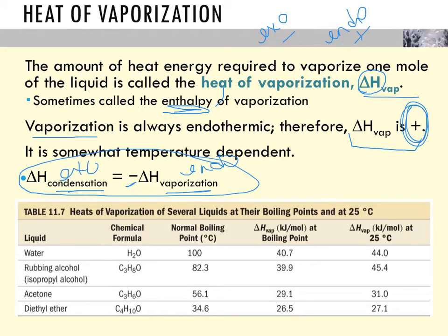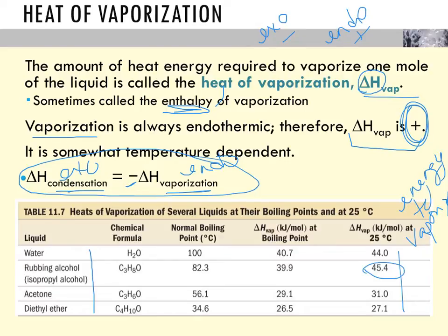Comparing four different substances, the heat of vaporization tells you the energy required to vaporize or boil them. Isopropyl alcohol requires the most energy to boil, with water close behind. This is completely dependent on intermolecular forces — water has strong hydrogen bonding, and so does rubbing alcohol, so they have higher heats of vaporization.